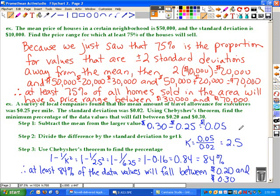We've already determined that 75% is the proportion of values that are plus or minus two standard deviations away from the mean. So we're going to take this two and multiply it by what our standard deviation is worth in this particular problem, which is $10,000, and get $20,000. This value, then, is subtracted from the mean and added to the mean. So when we subtract $20,000 from $50,000, we get $30,000. If we do $50,000 plus $20,000, we get $70,000. Therefore, at least 75% of all the homes sold in the area will have a price range between $30,000 and $70,000.